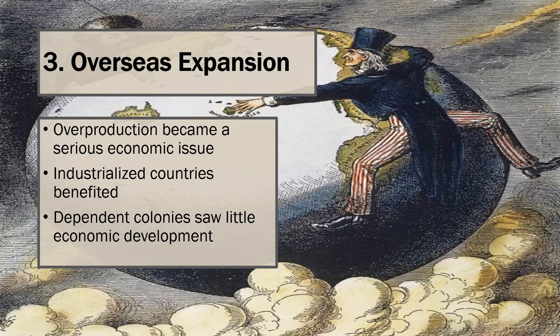As more countries industrialized and the capacity to produce goods increased, overproduction became a serious economic issue. Domestic markets could no longer consume the amount of goods being produced. As a result, international trade transformed industrial economies from mercantilist to capitalist systems. Industrialized economies looked to increase exports of their products. The desire to increase exports, however, caused both economic and political rivalries among industrialized countries as businesses sought out new international customers and enlisted their governments' assistance to help open previously closed or inaccessible markets.